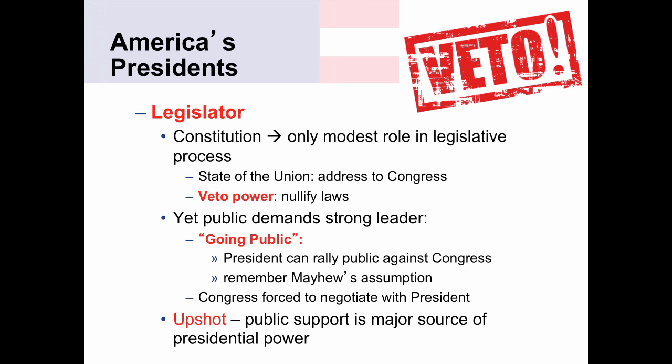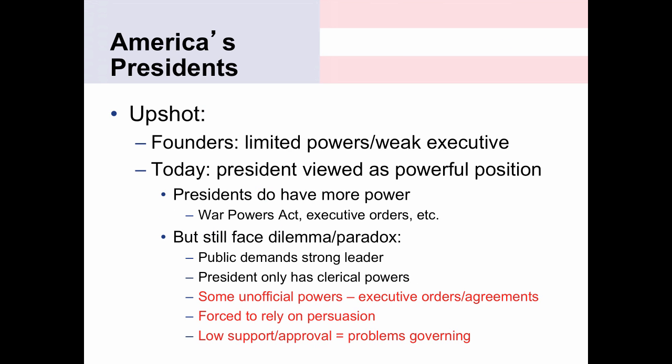When the president is popular, his agenda typically passes through Congress—often very quickly and very easily. When the president is very unpopular, however, Congress is more likely to oppose the president's agenda. Going back to Mayhew's assumption, members of Congress—especially those of the other party—are going to be very reluctant to side with a deeply unpopular president. They're going to be more likely to oppose the president so that they can be on the side of the public and get reelected.